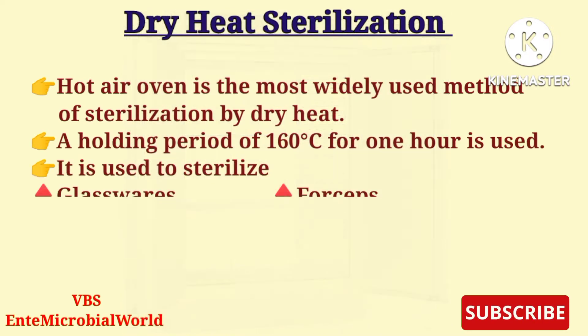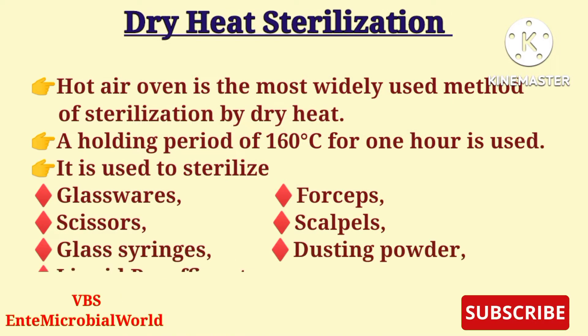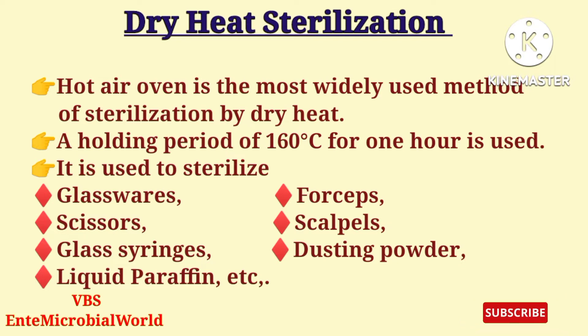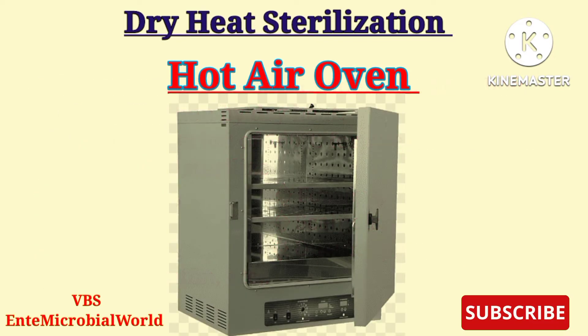A holding period of 160 degrees Celsius for one hour is used in the hot air oven. It is used to sterilize glass vases, forceps, scissors, scalpels, glass syringes, dusting powder, liquid paraffin, etc.